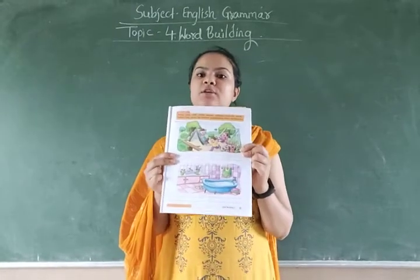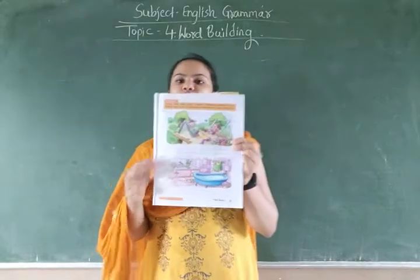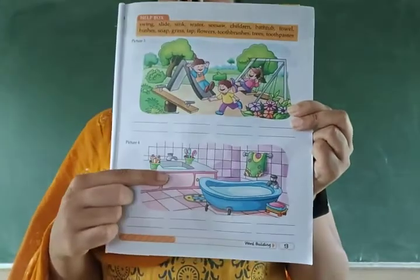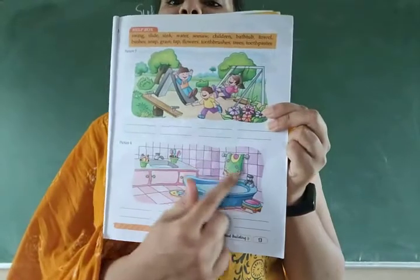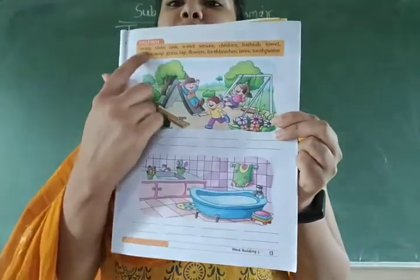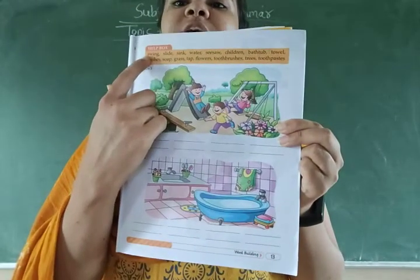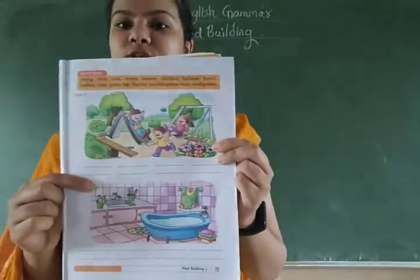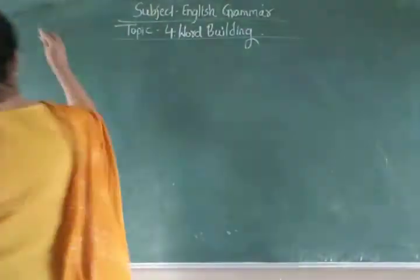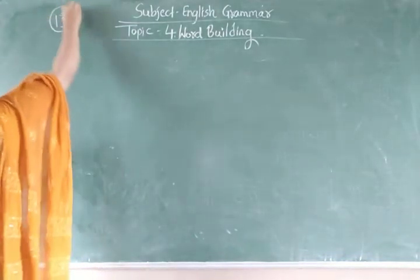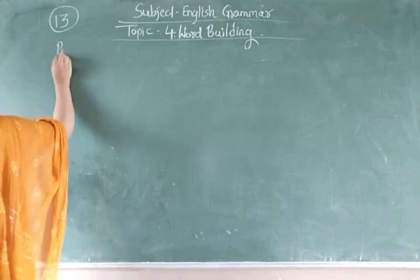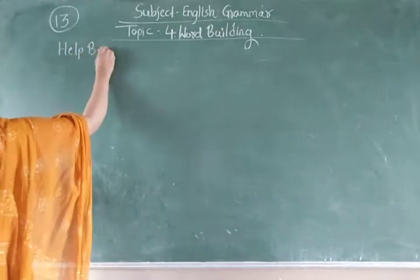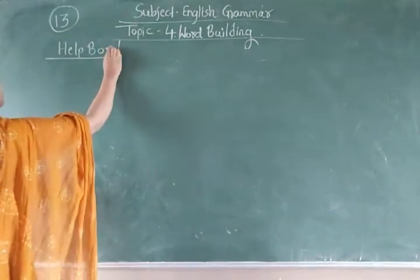Similarly, as we did page 12, we have to do page number 13 today. So everyone take out page number 13. Here there are also two pictures given — this is the picture of a garden, and this is the picture of a bathroom. There are so many things you can see. Yahan par humein ek help box diya hua hai. Take out your pencil and sharpen it well.